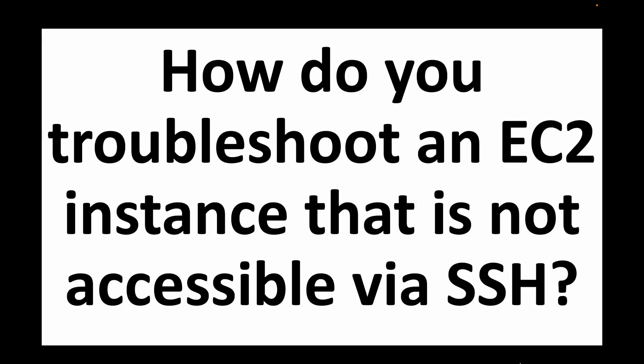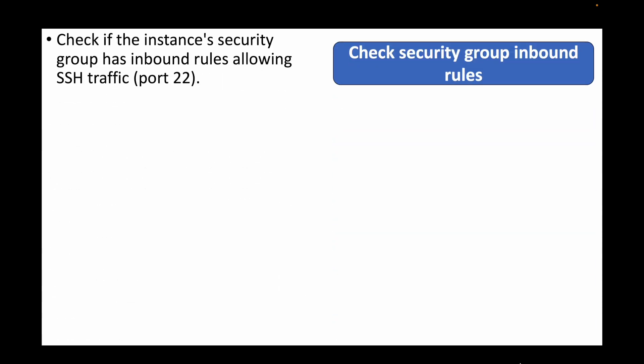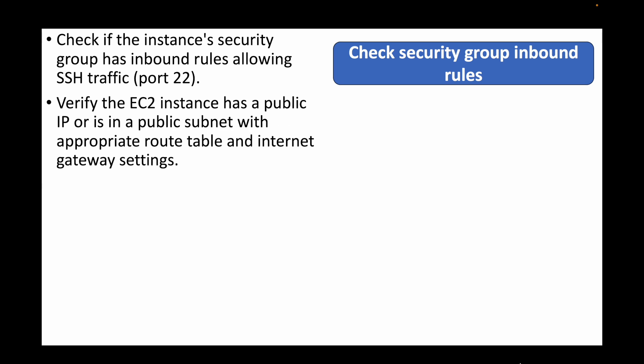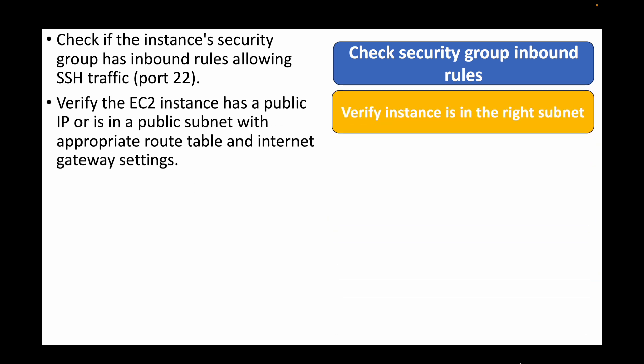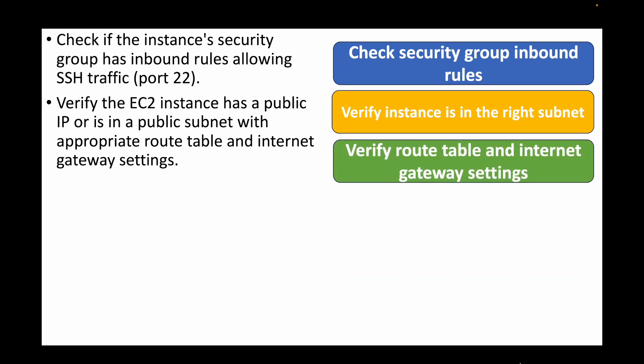The next question is: how do you troubleshoot an EC2 instance that is not accessible via SSH? First, check your security groups to verify whether you are allowing SSH traffic on port 22. If you are getting a connection timed out error, that is definitely a security group problem — you need to add a rule to allow that traffic. Then verify if the instance has a public IP address and is running in the right subnet, with proper route table configurations and gateway settings.